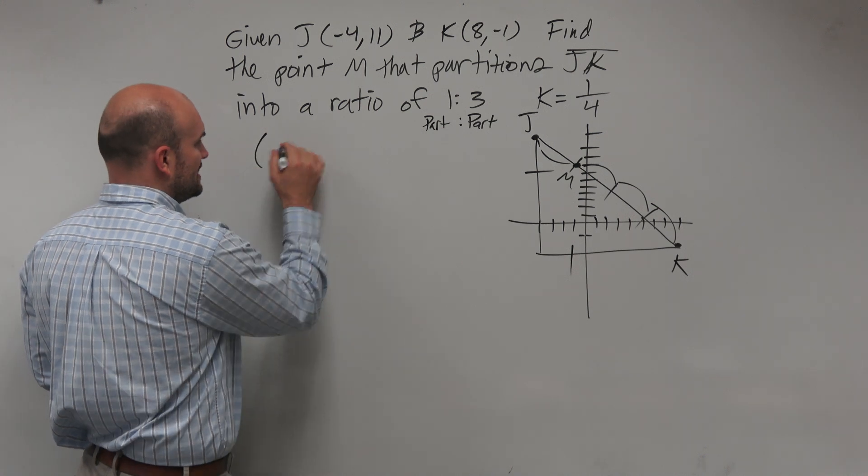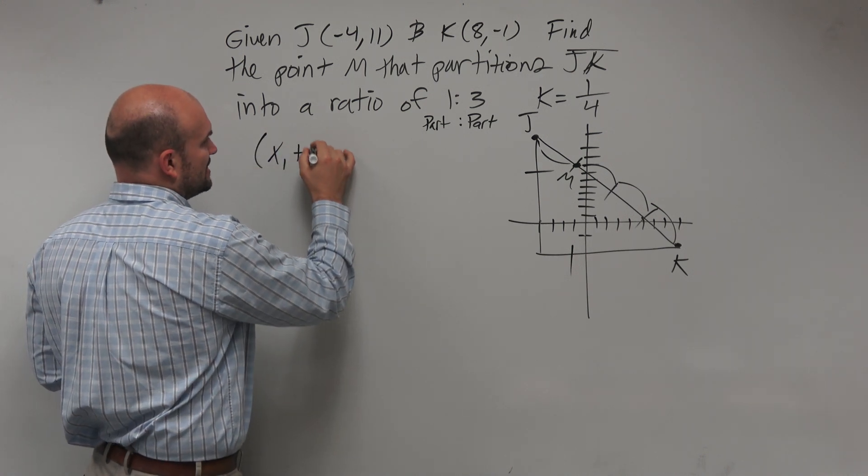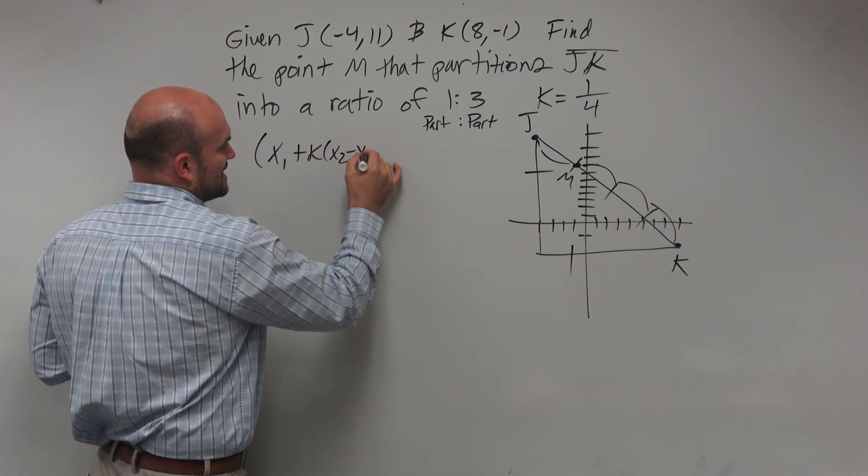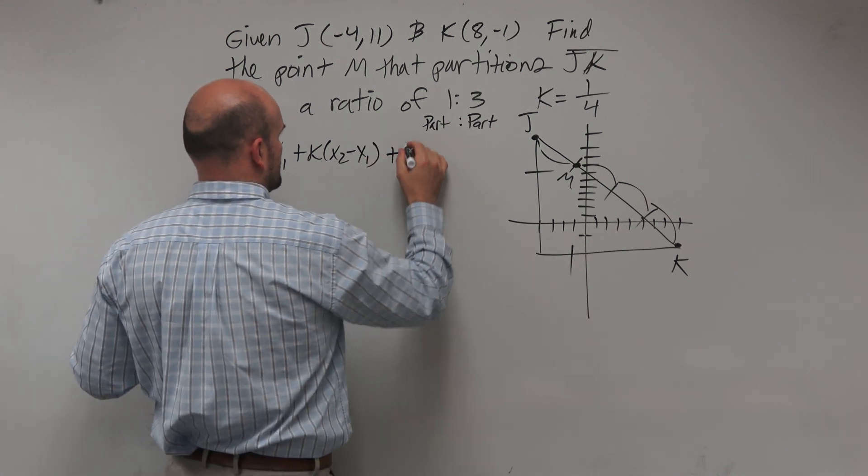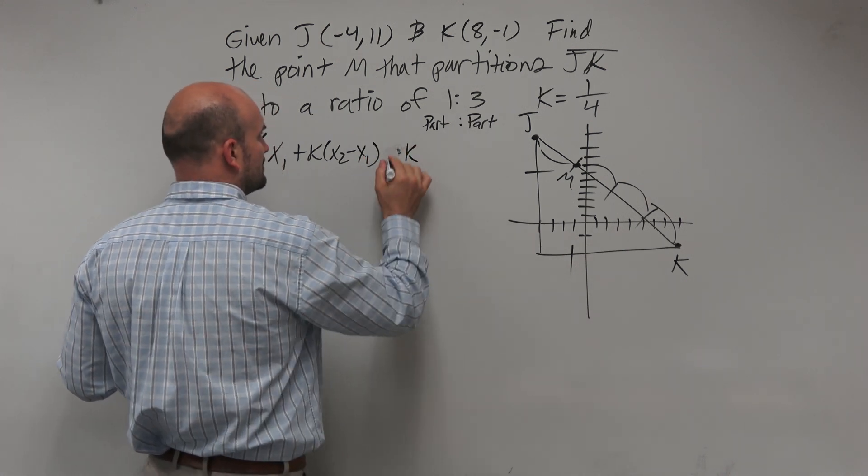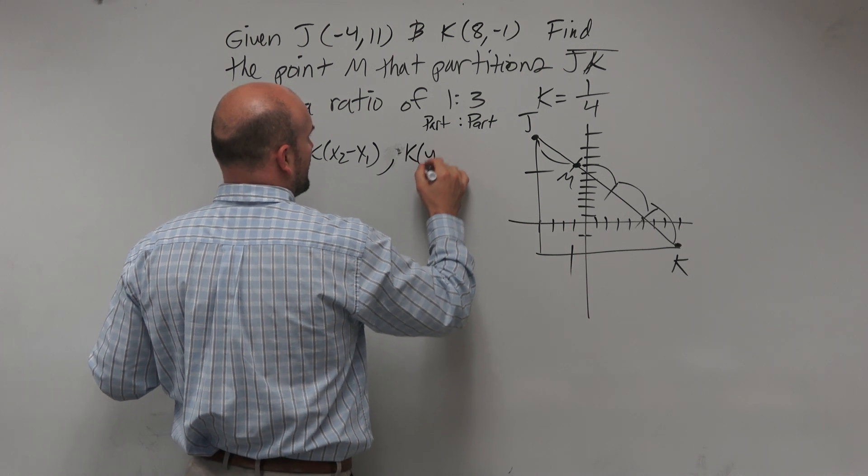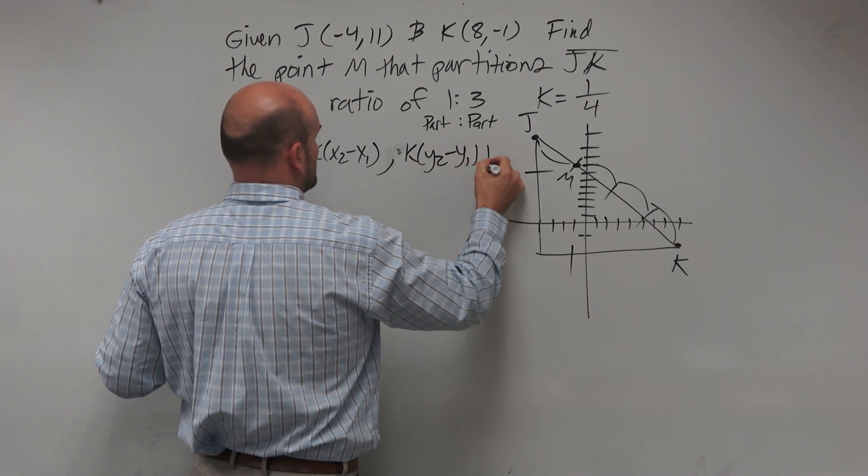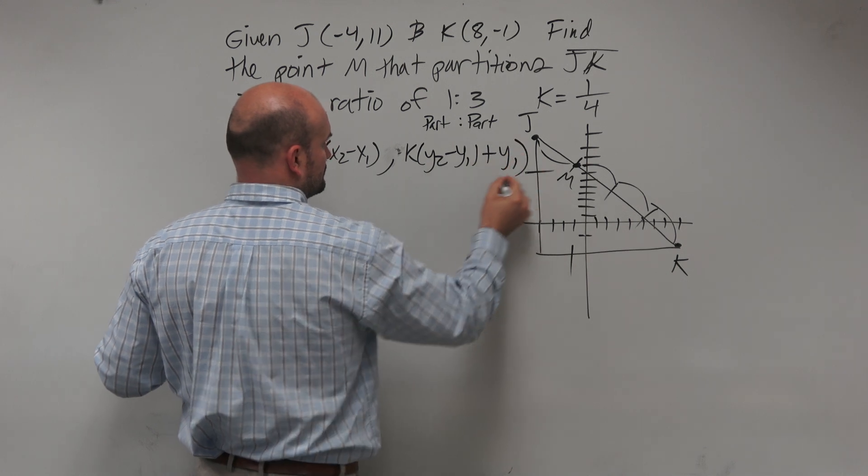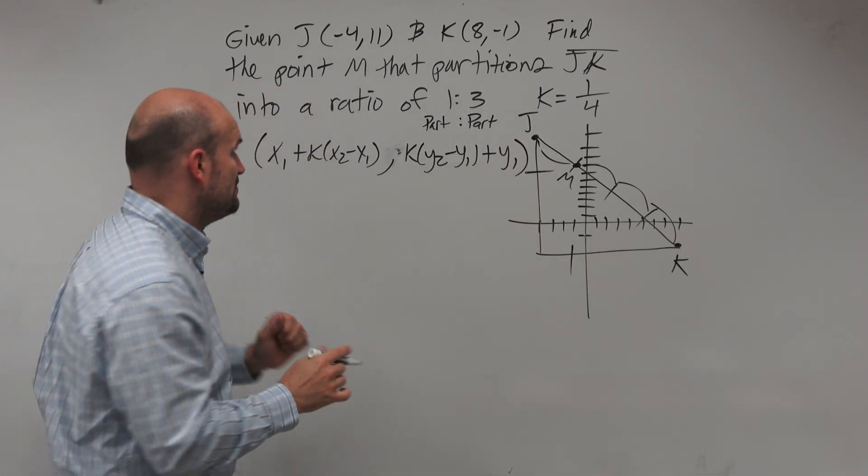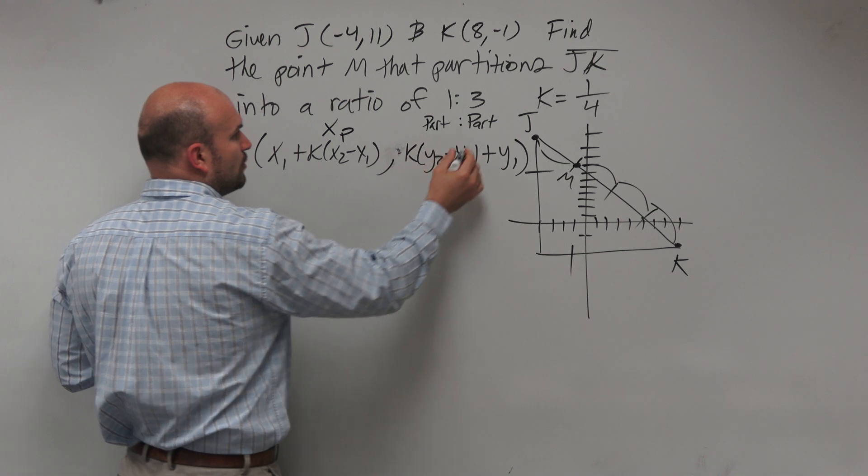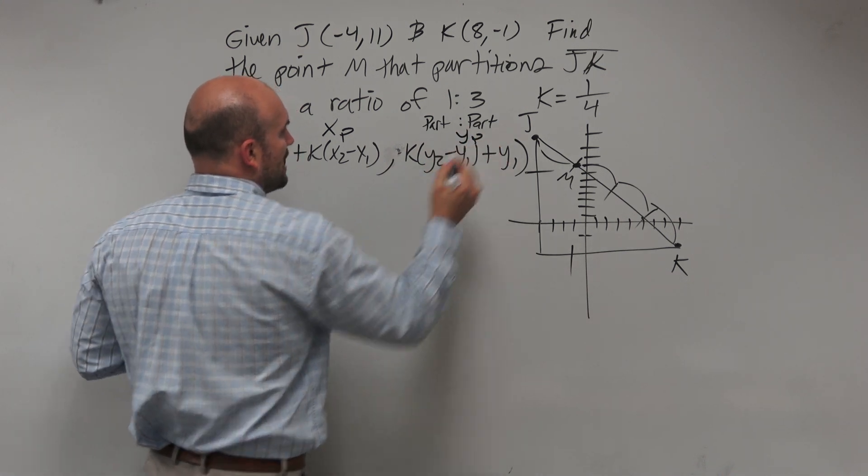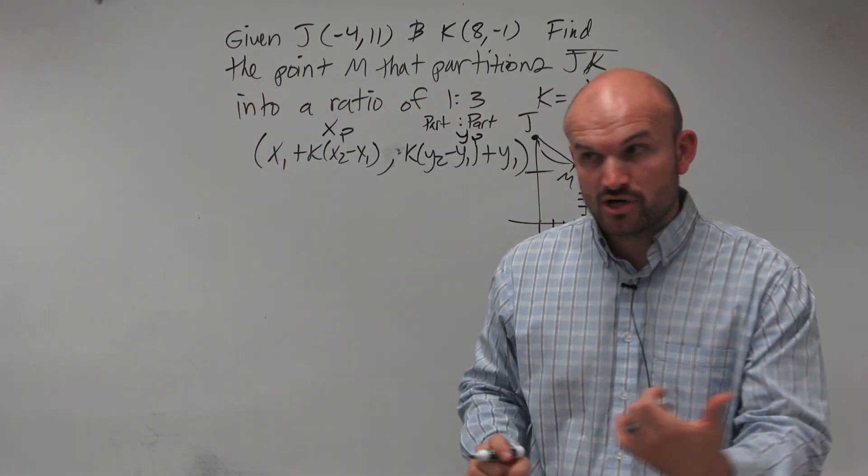And if you remember, the formula that we've been given, that we've worked on, is going to be x1 plus k times (x2 minus x1), comma, y1 plus k times (y2 minus y1). This is going to be your coordinate point. This is going to represent my partition point for xp and yp. Those are going to be the x and y coordinates of my partition point.